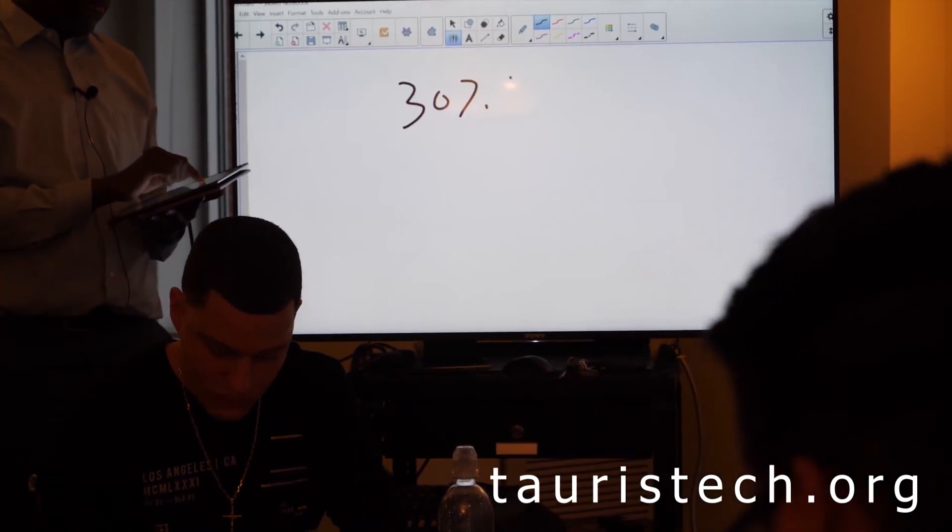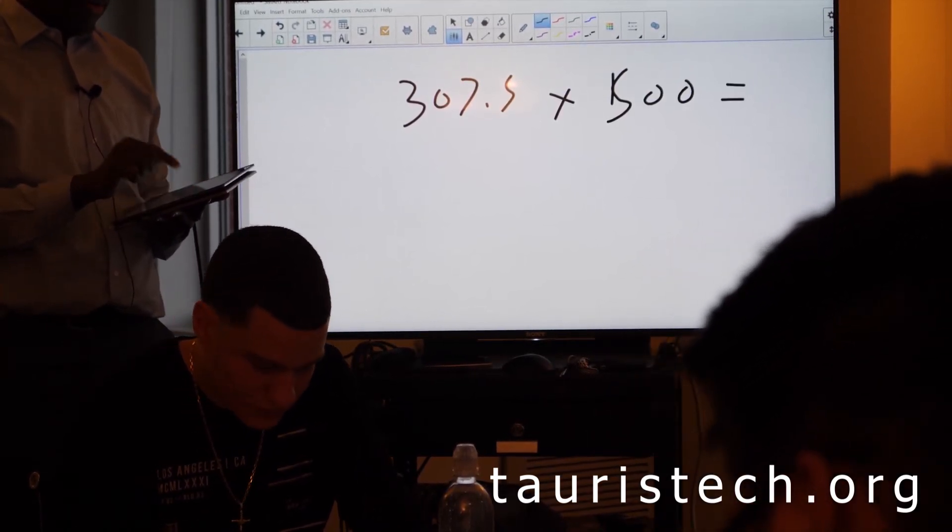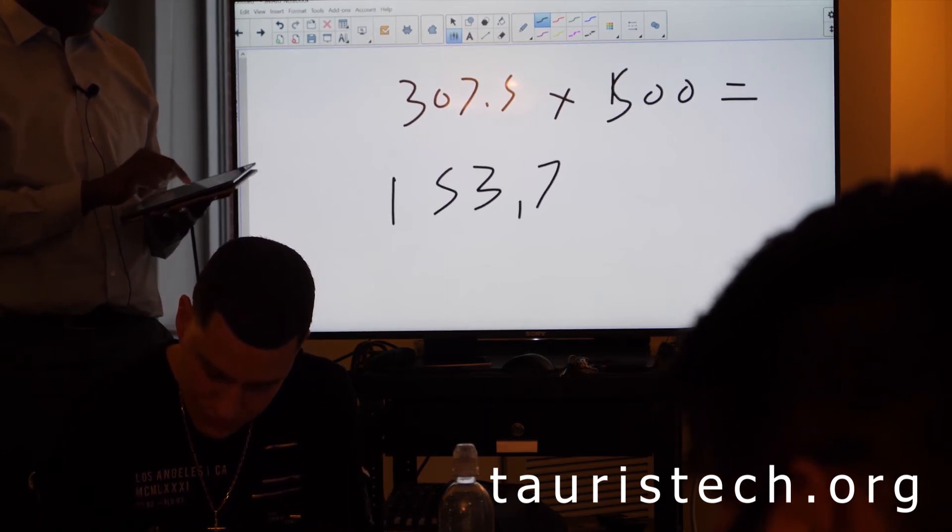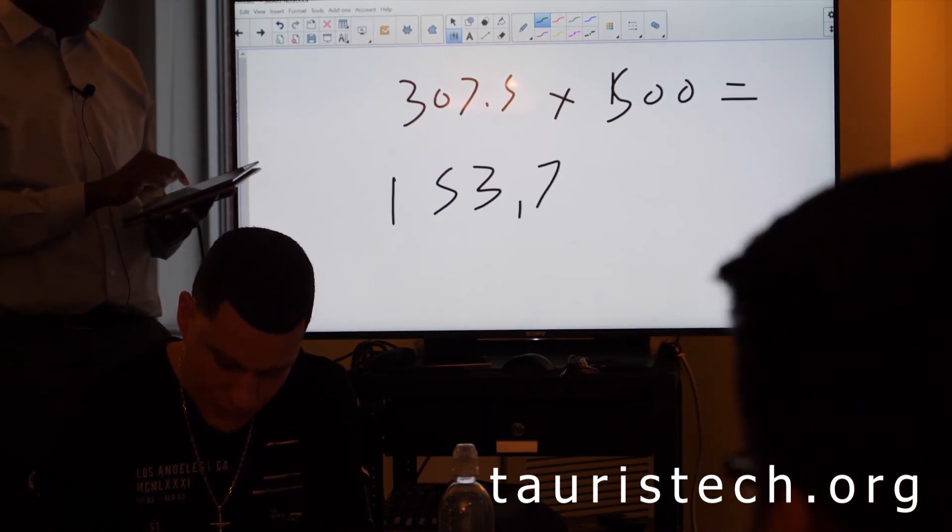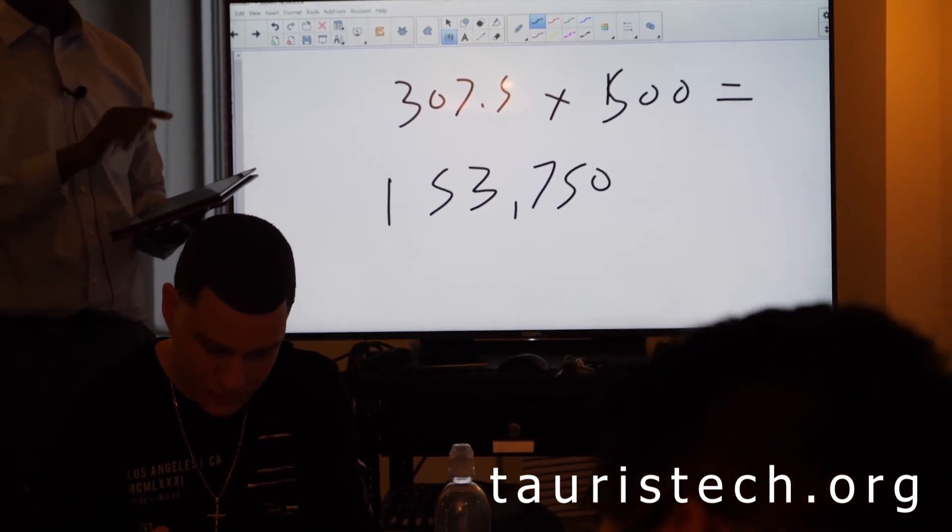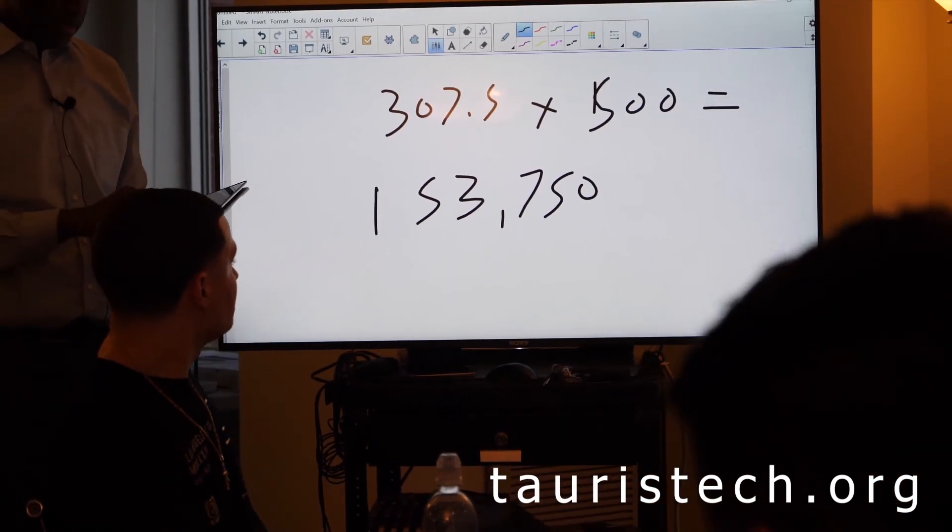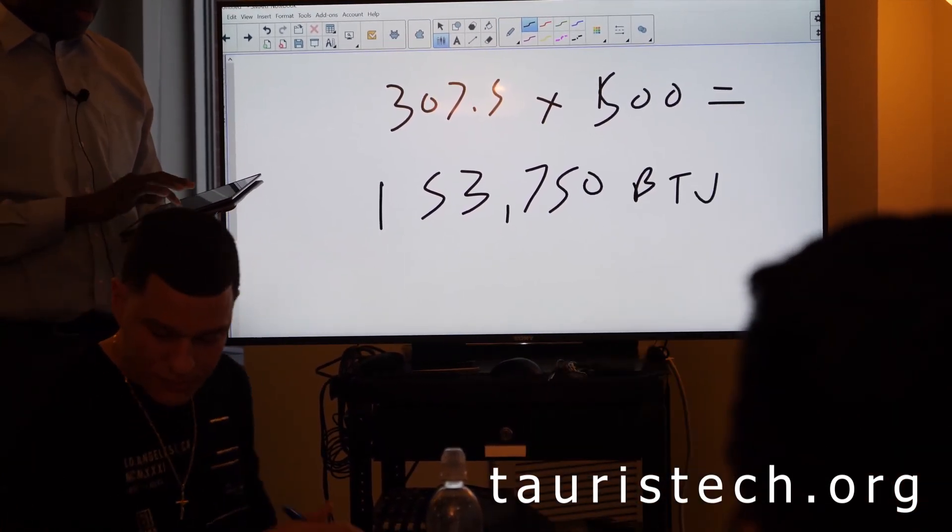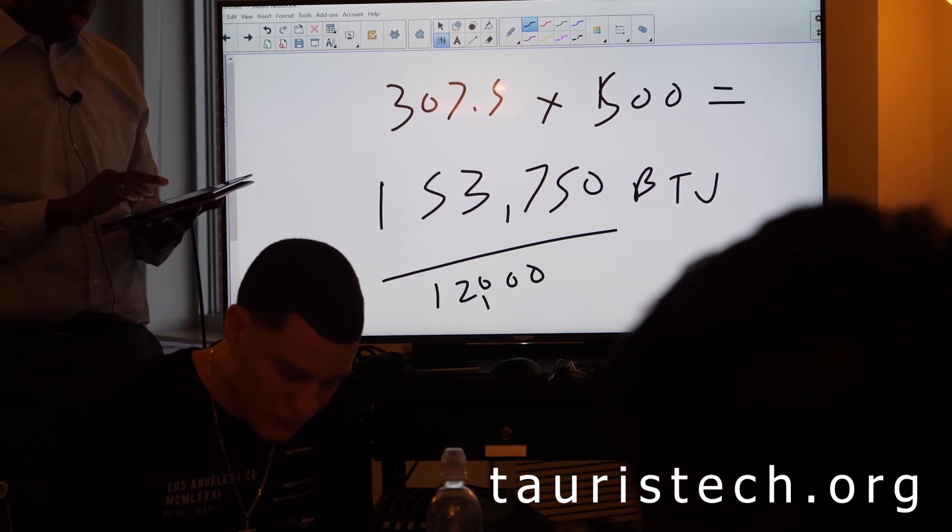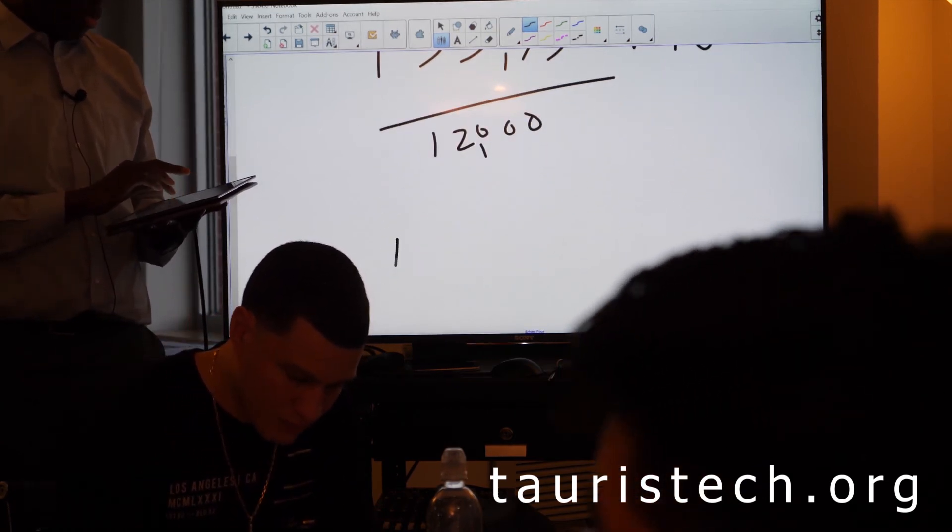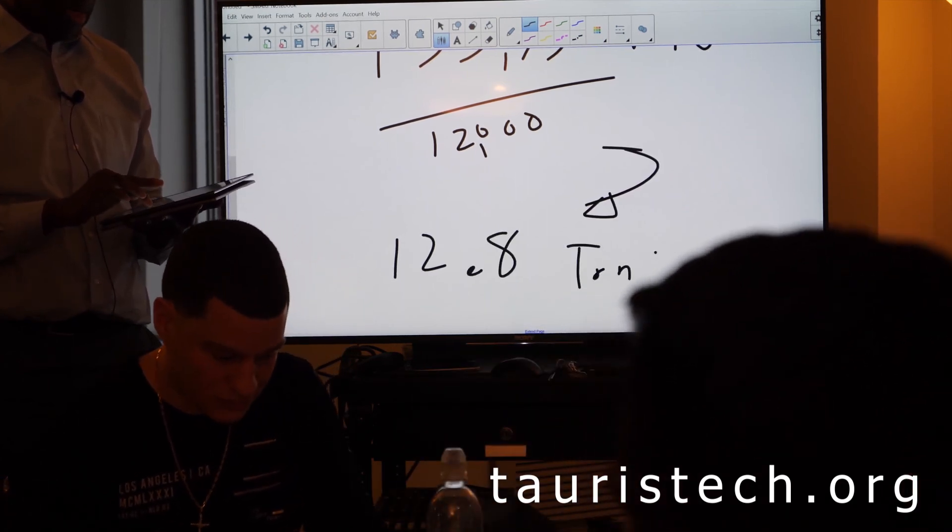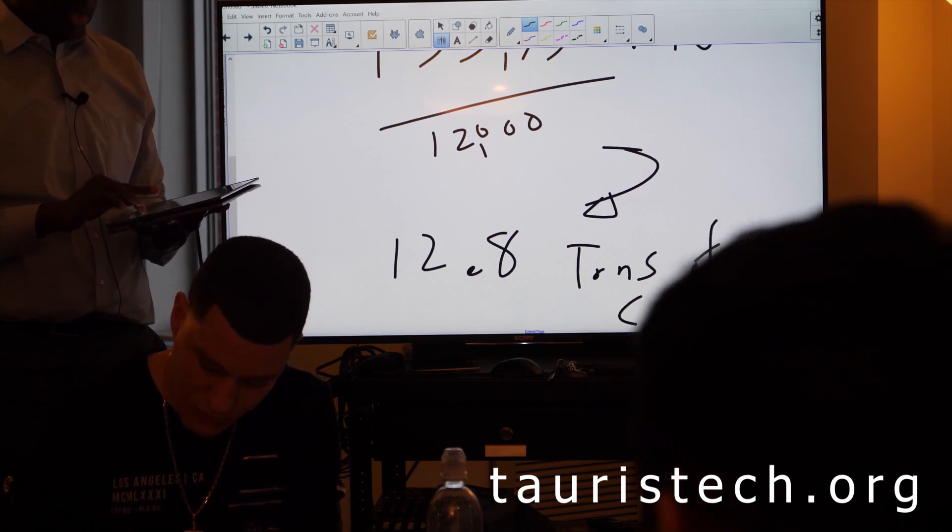307.5 times 500 equals 153,750 total BTU. What do we do with that? Divide by 12,000 to get tons of cooling.